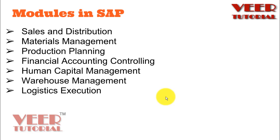SAP also has different industry specialization modules. For example, if you are in the field of banking, there are separate types of transactions because banking does not need the manufacturing process, and manufacturing companies do not need banking processes. Similarly, the oil and gas sector has different types of transactions that cannot be used in manufacturing plants. These kinds of specialization modules are also available in SAP.